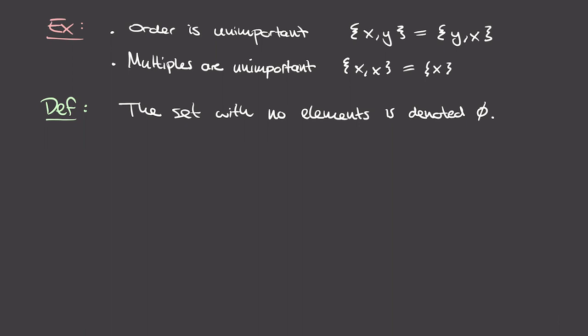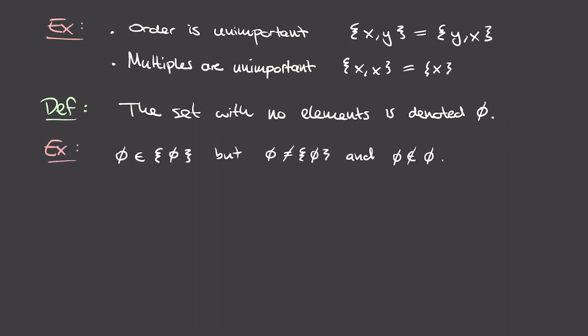We now move on to define perhaps the most important set of all, despite the fact that it has no elements. The empty set is the set that has no elements, and it's denoted by the symbol ∅. Another way to write the empty set is just as brackets with no elements inside. The reason the empty set is so important is that it's very simple, and you can build more complicated sets based just on the empty set. For example, you can consider the set that contains the empty set — think of it as an empty bag inside another bag.